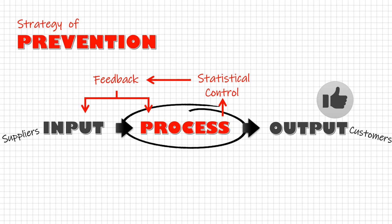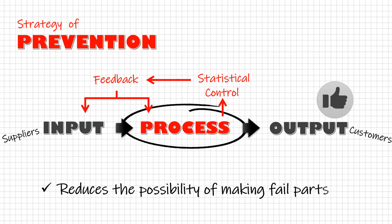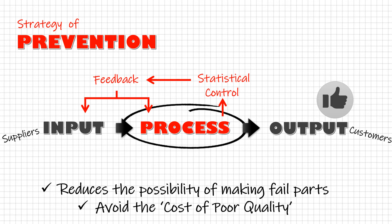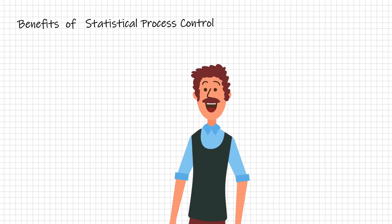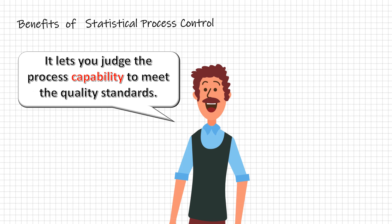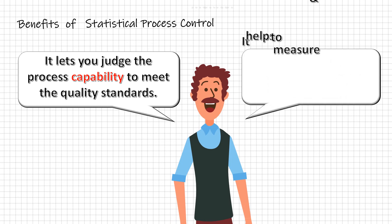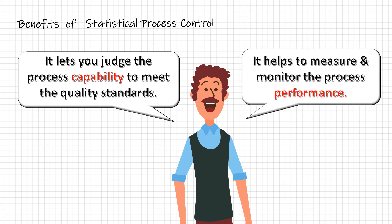We need Statistical Process Control so that we can prevent defective parts from being manufactured and avoid the cost of poor quality. With SPC, we can have two benefits. First, it helps us to identify if the process is capable enough to meet the required quality standards. Secondly, it helps us to measure and monitor if the process is performing as required — that is, the output is within the natural variation limit. We will study more about natural variation in upcoming videos, but before that, we need to understand the working principle and basic assumptions of SPC.